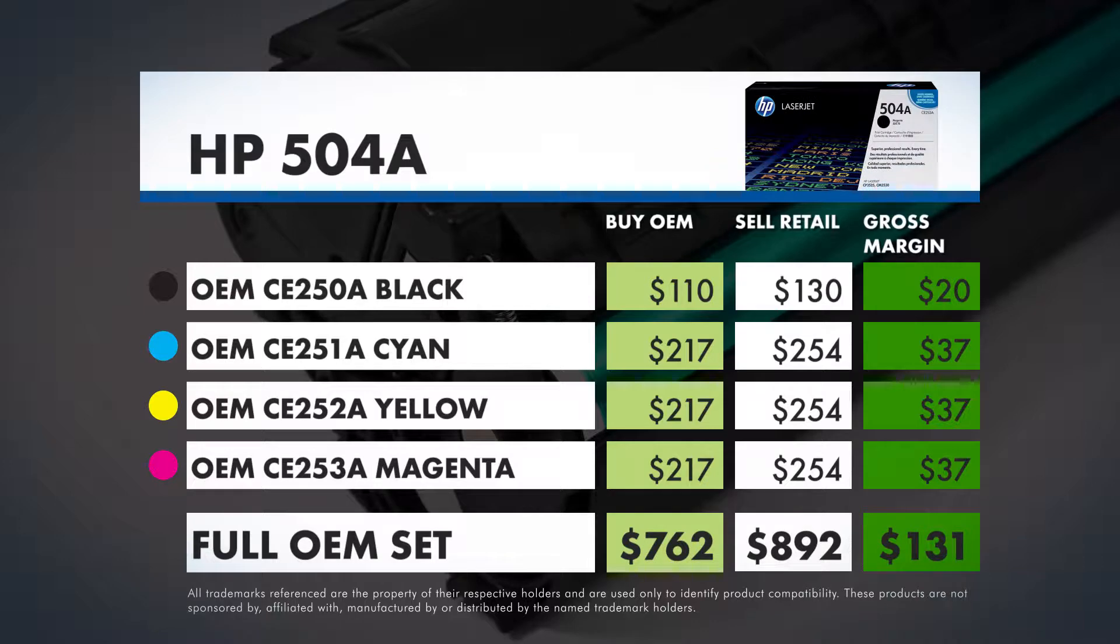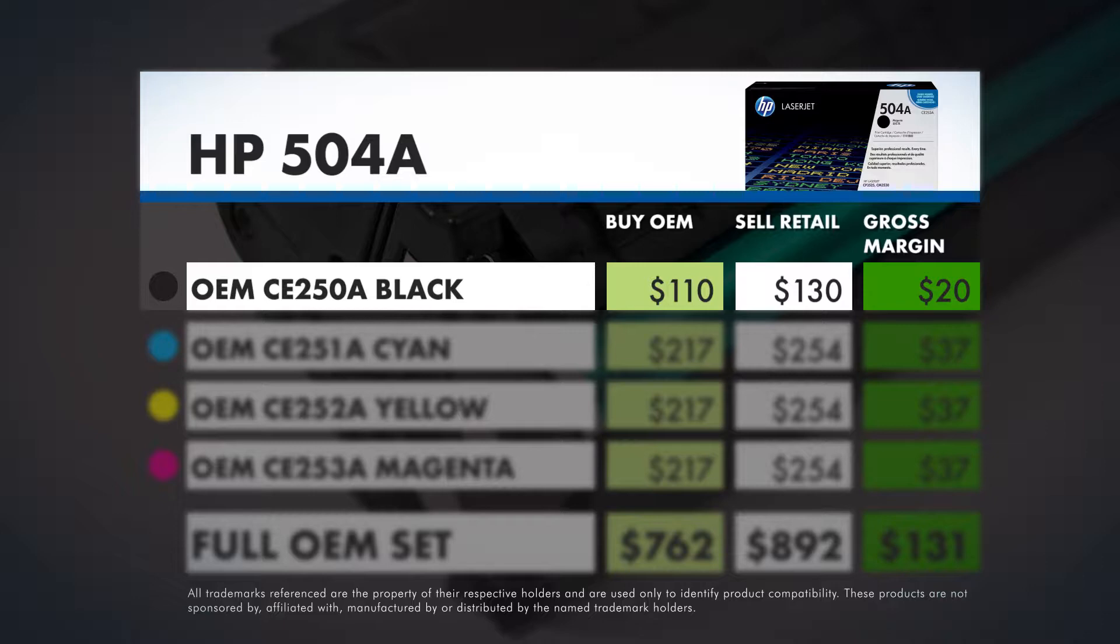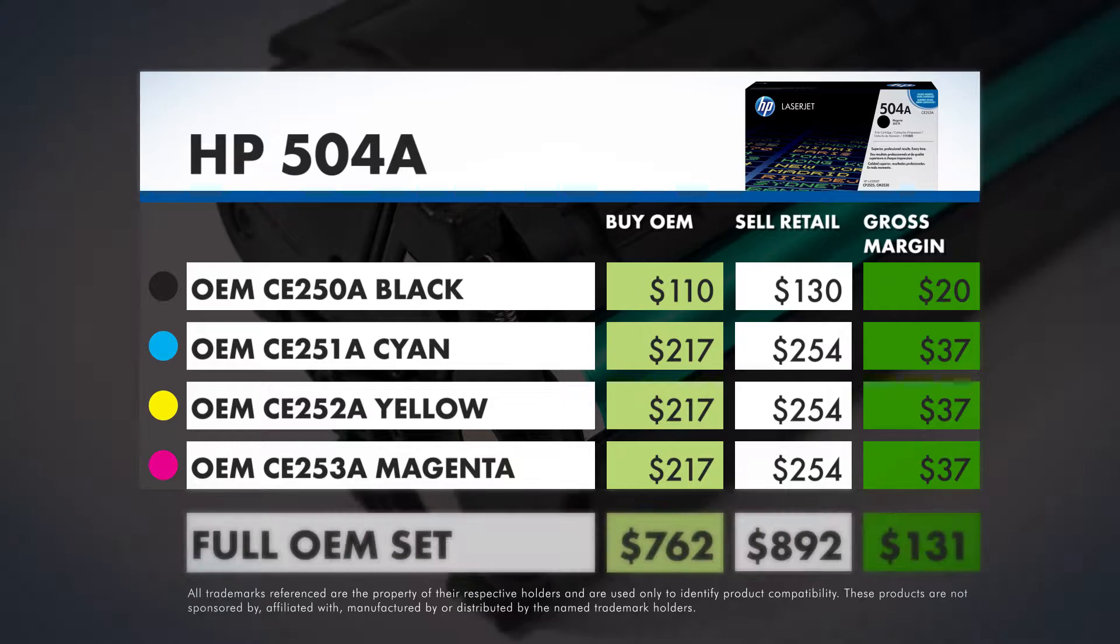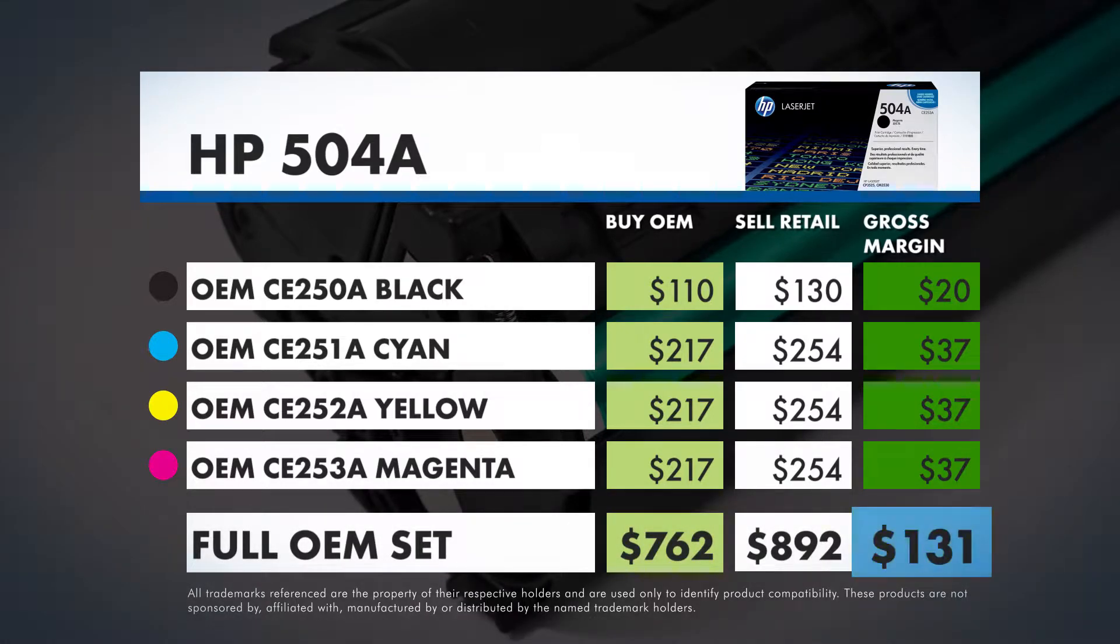We'll look at an approximate price model of an OEM. This is HP's 504A black toner cartridge. You're making about $20 per black cartridge. For the color cartridges in this series, the gross profit is about $37 each. The total gross profit you're looking at is $131 and your customer is looking to spend nearly $900 on the complete toner set.